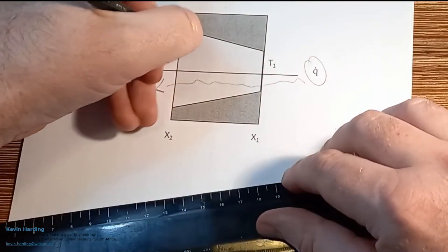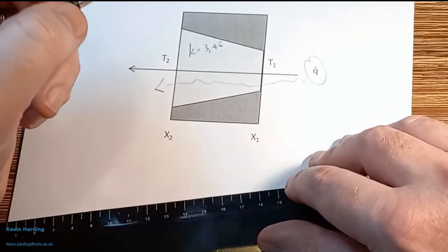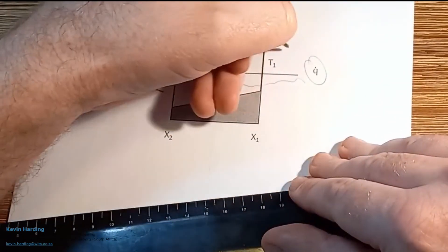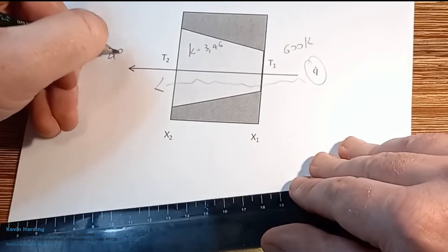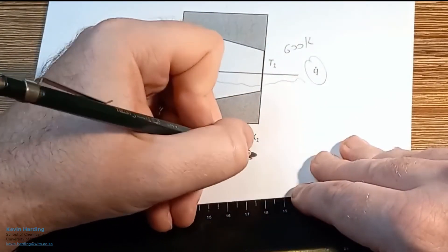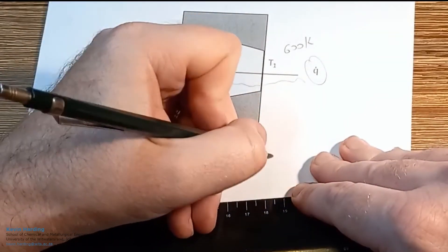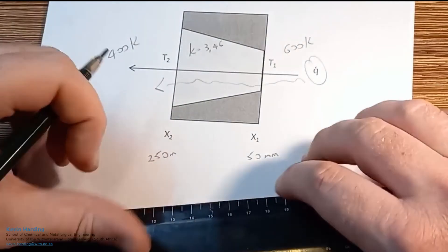Let's write these quickly. k equals 3.46. I'm not going to write the units because we're running out of space. t1 on the left is 600 kelvin, so this is the hot side. The cold side goes through to 400 kelvin. x1 is at 50 millimeters and x2 is at 250 millimeters.